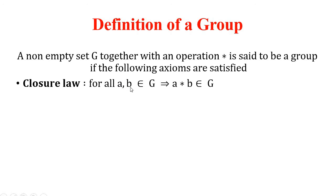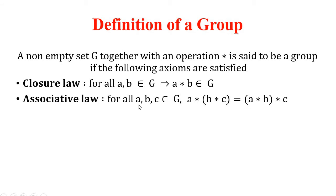If you combine any two elements of G together — whether as a sum, difference, or product — and that result also exists in G, then we say G satisfies the closure law. Second is the associative law: for all a, b, c belonging to G, a star (b star c) equals (a star b) star c. For example, when adding three natural numbers, whether you add b and c first or a and b first, the total sum remains the same.